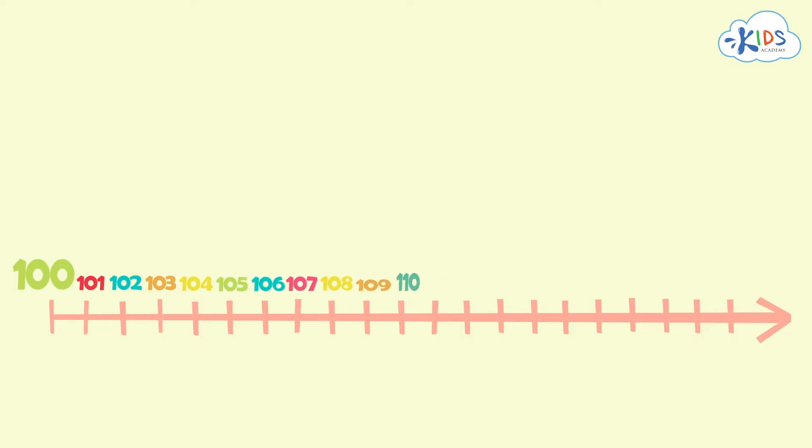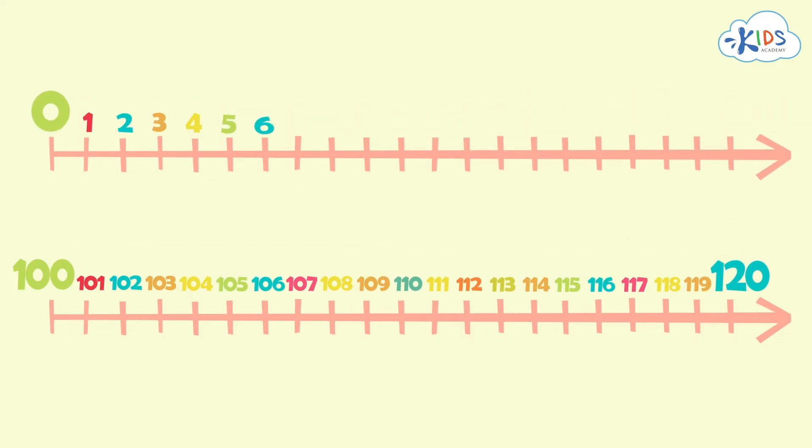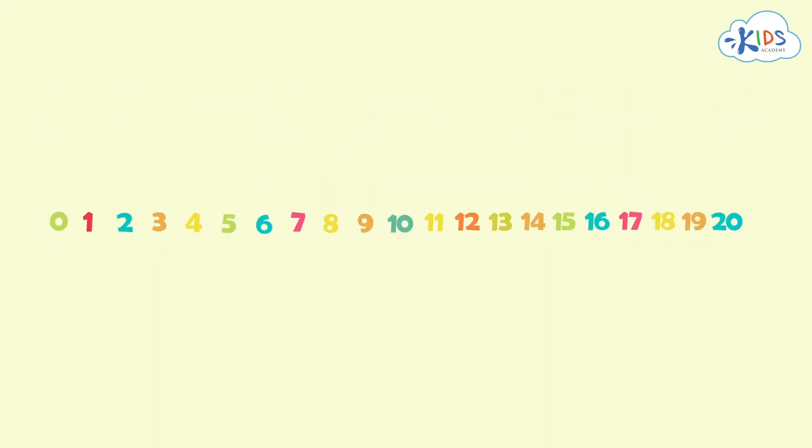When we count past 100 to 120, we can follow the same pattern that we used when counting from 0 to 20. You can even start counting at any number as long as you remember the pattern from 0 to 20.